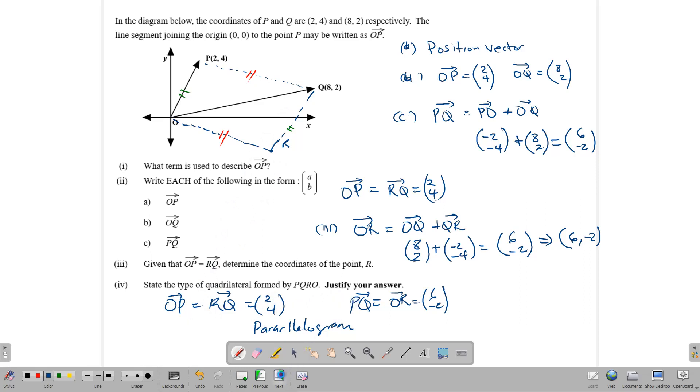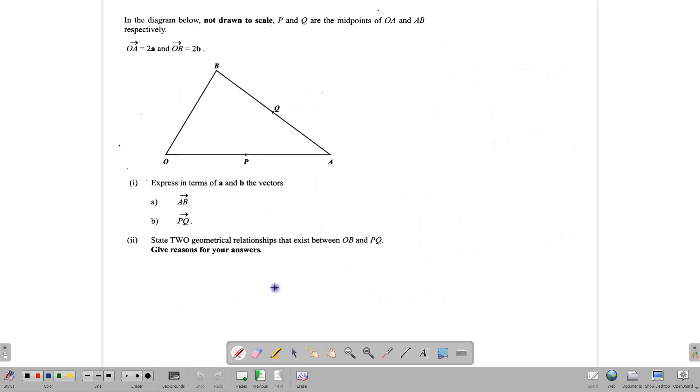Now let's look at another question where the components are in algebraic form. So here we have OB is equal to 2B, and OA is equal to 2A, and we're told that P and Q are the midpoints of OA and AB. So Q is the midpoint of AB, and P is the midpoint of OA. OA is equal to 2A, which would mean that this part here is A, and this part here is A. Just filling in the information before we start working. And OB is equal to 2B. So all of this here is equal to 2B, going in that direction.